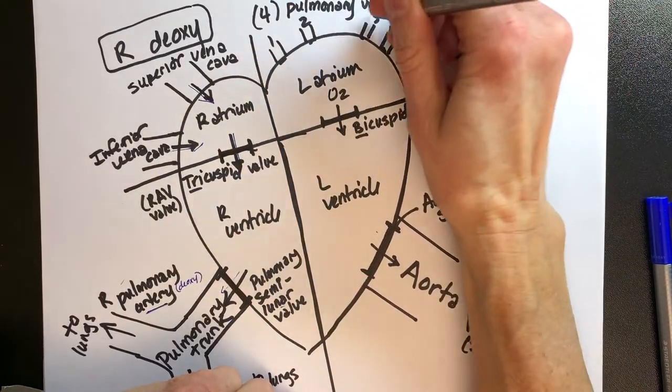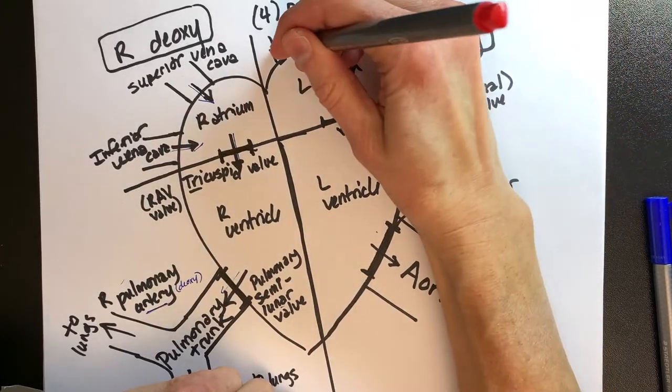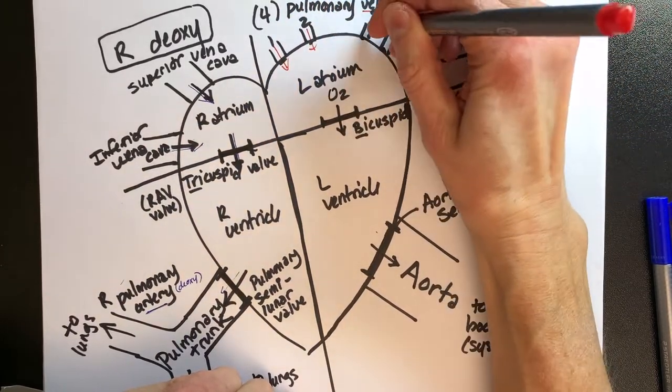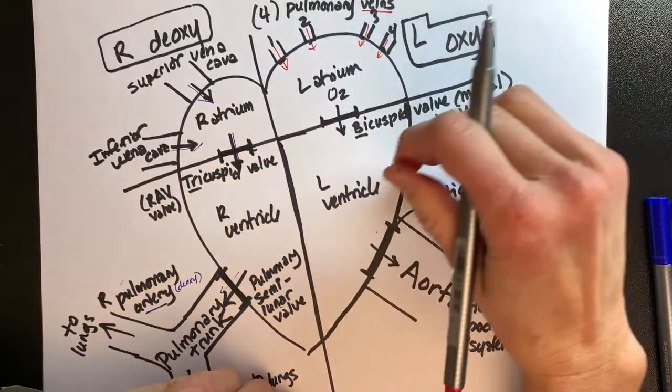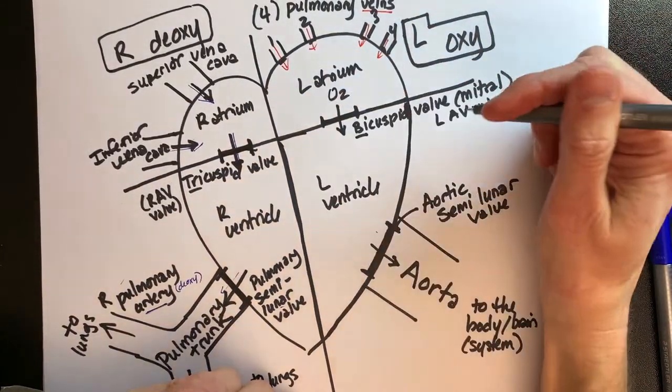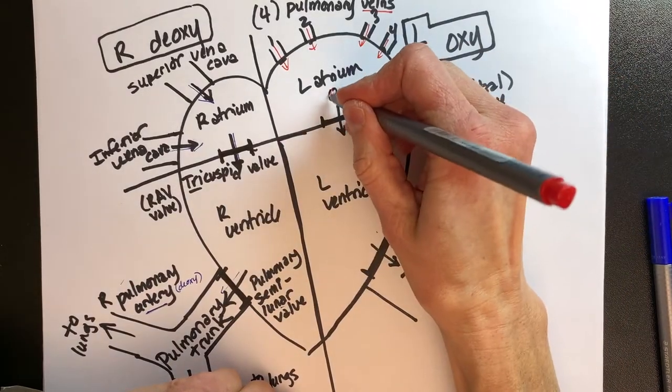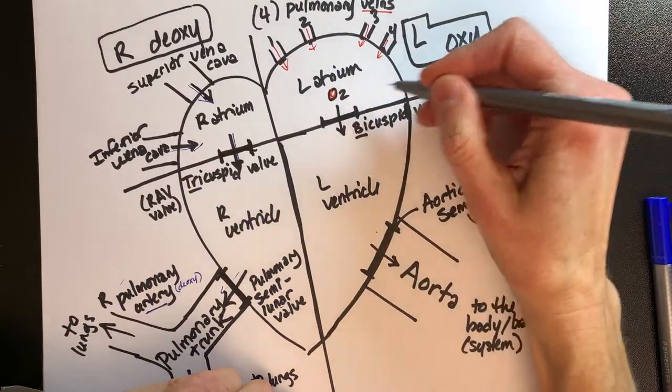Let's come back in through the pulmonary veins. There are four of them: one, two, three, four. The four pulmonary veins, two from each lung, will come into the left atrium with their oxygenated blood.